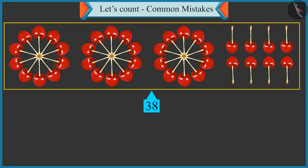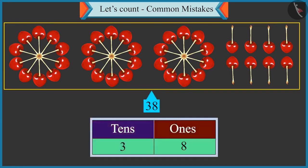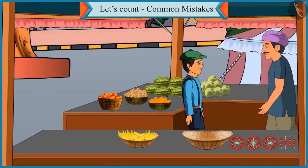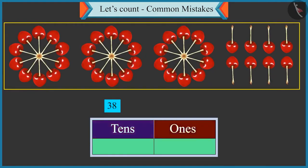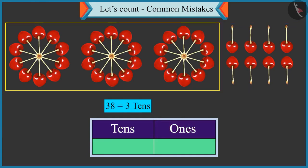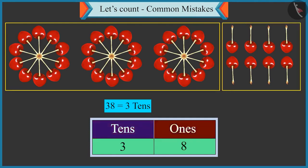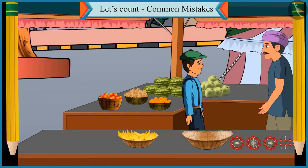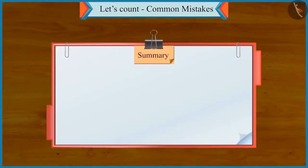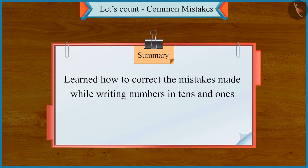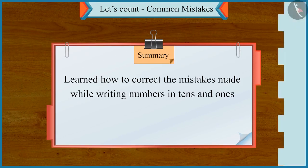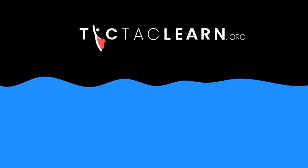Chotu answers: eight in the box of tens and three in the box of ones. Oh, Chotu — there are thirty-eight cherries in total. Thirty-eight means three tens and eight ones. Now think carefully: how will you write thirty-eight in the boxes of tens and ones? Three tens means three will come in the box of tens, and there are eight single cherries, so eight will come in the box of ones. Very good. So children, today we learned how to correct the mistakes made while writing numbers in tens and ones.